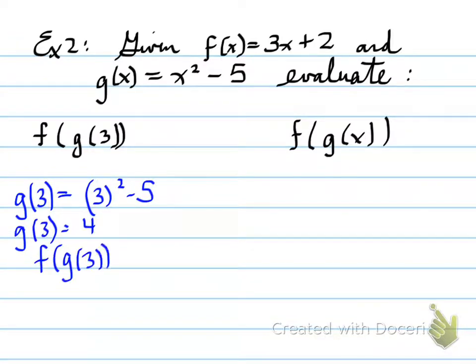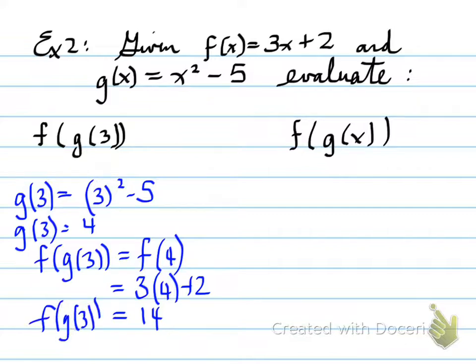So you're going to plug it into that. So g at 3 is going to equal a value of 4. Find f at g at 3, well that's the same as finding f at 4. The reason why it's f at 4 is g at 3 was 4. So we plug it in, now f at 4 and we get 3 times 4 plus 2, which is 14. And that is f at g at 3.